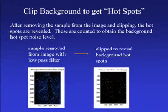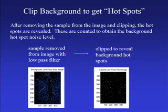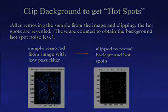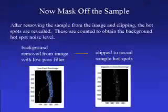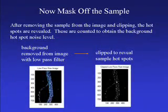This mask can now be used to remove the sample from the image, leaving only a haze and the desired hotspots. Clipping is used to remove the haze, and then the hotspots are counted. The same mask is also used to abstract the sample from the image, and then clipping yields its hotspots.